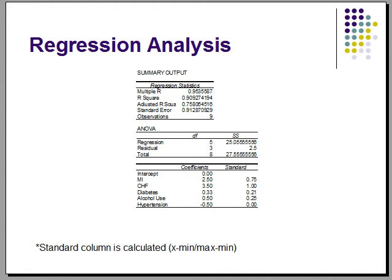Using the indicators per disease, I ran a regression using the Excel analysis tool pack. The input Y range was the length of stay. The input X range were the indicators by disease. This is the input I received from the analysis. The coefficients per disease, also known as the severity, are shown here.